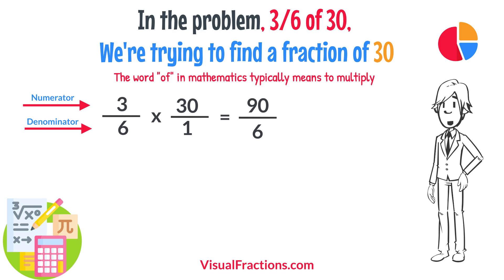To find the final answer, divide the numerator by the denominator. So, 90 divided by 6 equals 15.